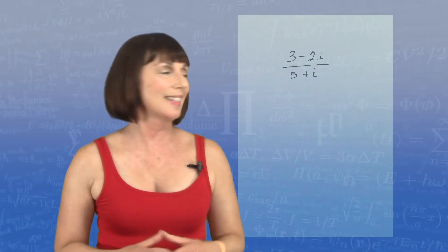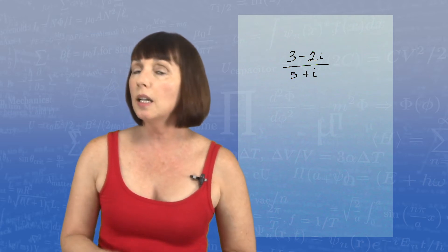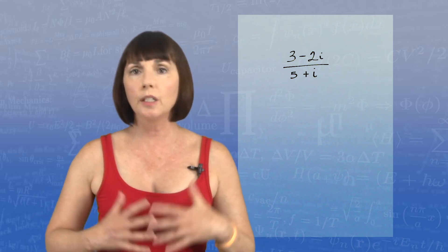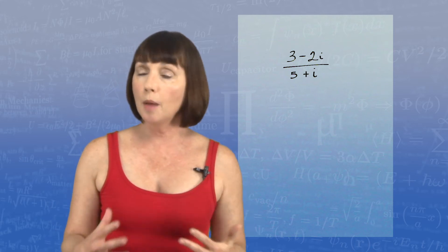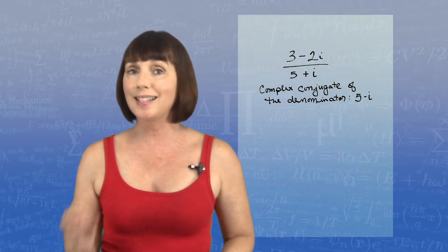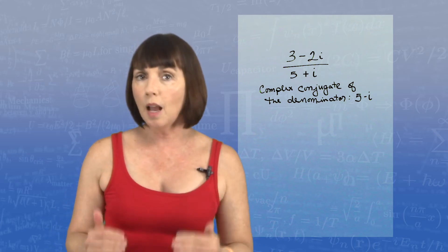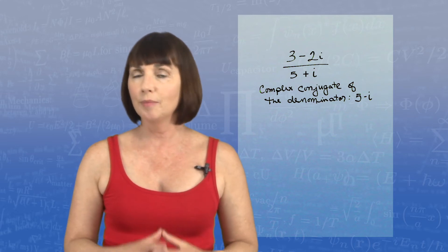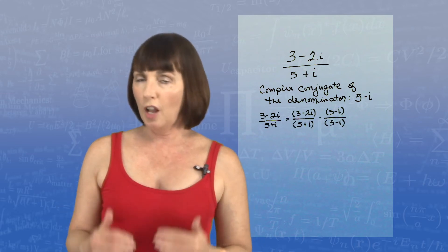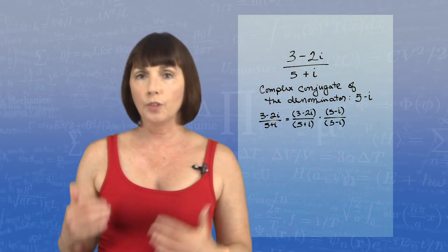Let's go back to 3 minus 2i over 5 plus i and use this idea of complex conjugates. The complex conjugate of our denominator, 5 plus i, is 5 minus i. So we're going to multiply the numerator and denominator by 5 minus i, giving us 3 minus 2i over 5 plus i times 5 minus i over 5 minus i.